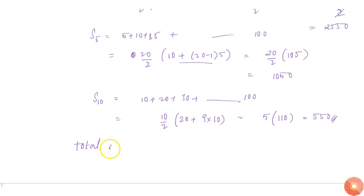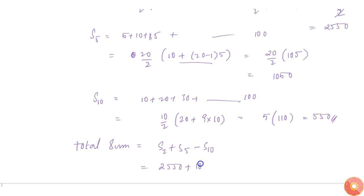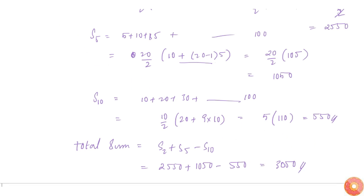The total sum is equal to S2 + S5 − S10, which is 2550 + 1050 − 550. This equals 3050. Therefore, the sum required in the question is 3050.